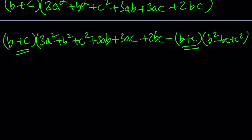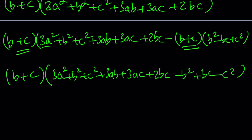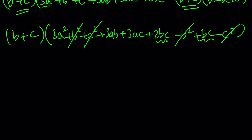Now we do have b plus c in common, so we can go ahead and take it out. The rest is going to give us: 3a squared just stays, plus b squared plus c squared plus 3ab plus 3ac plus 2bc minus b squared plus bc minus c squared. Notice that b squared cancels out and c squared cancels out. And remember we had 2bc — plus bc is going to give us 3bc.